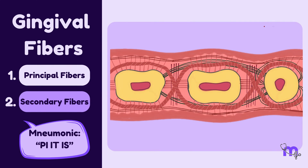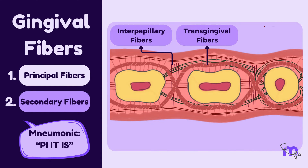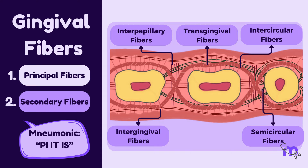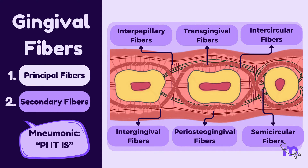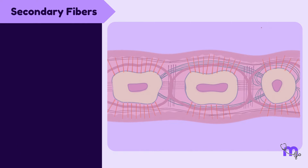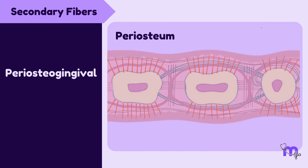Moving on, let's discuss the secondary group of fibres: interpapillary fibres, transgingival fibres, intercircular fibres, intergingival fibres, semicircular fibres, and periosteo-gingival fibres. Starting with the periosteo-gingival fibres — as the name suggests, they start from the periosteum of the lateral aspect of the alveolar process and extend to the attached gingiva.